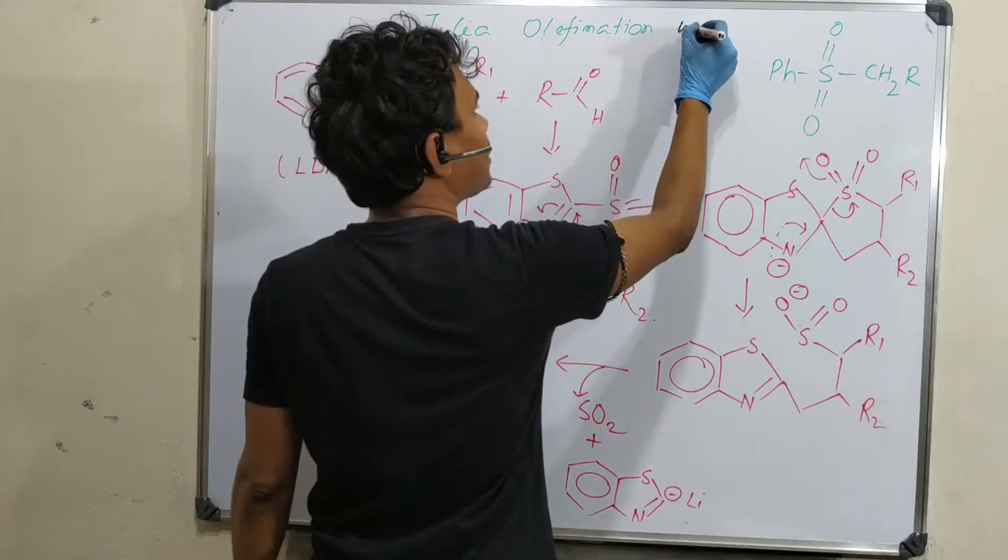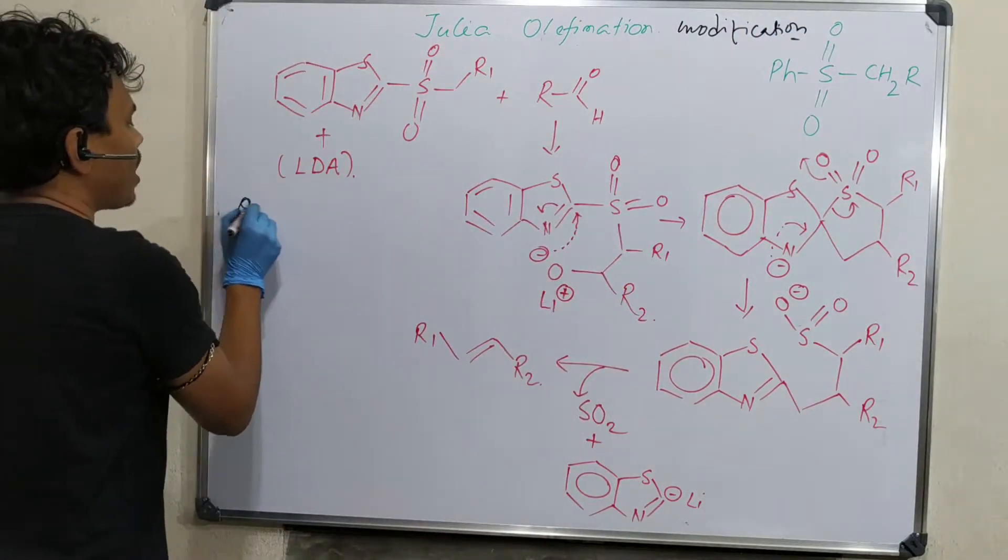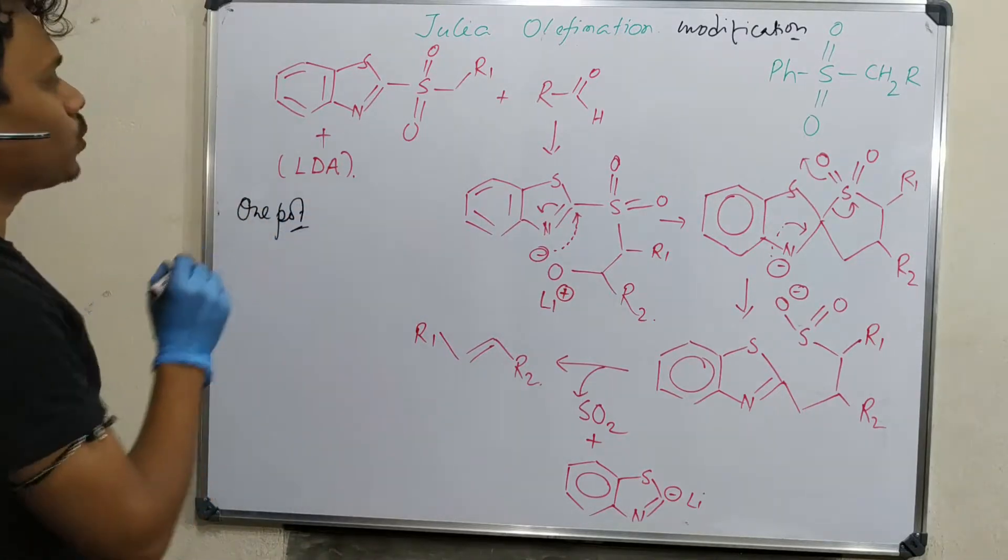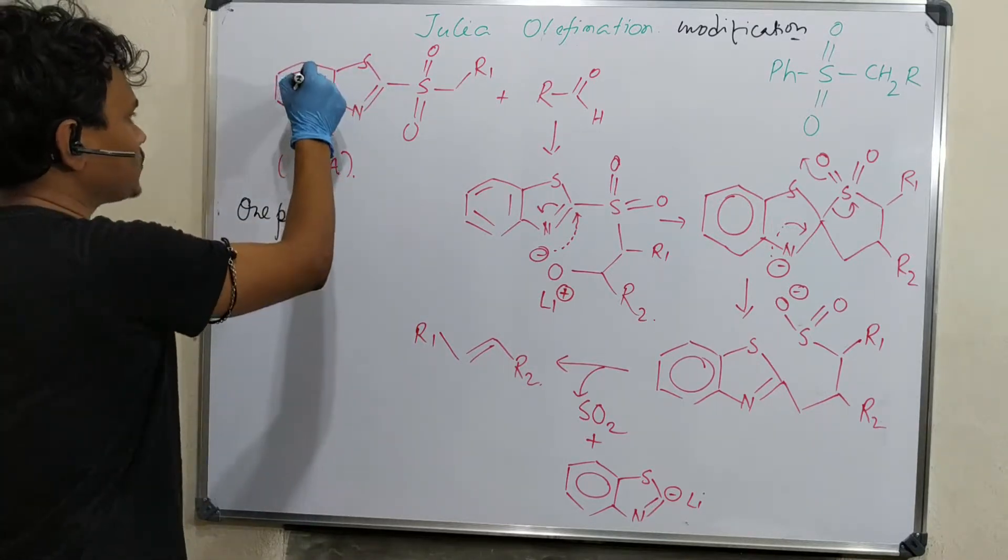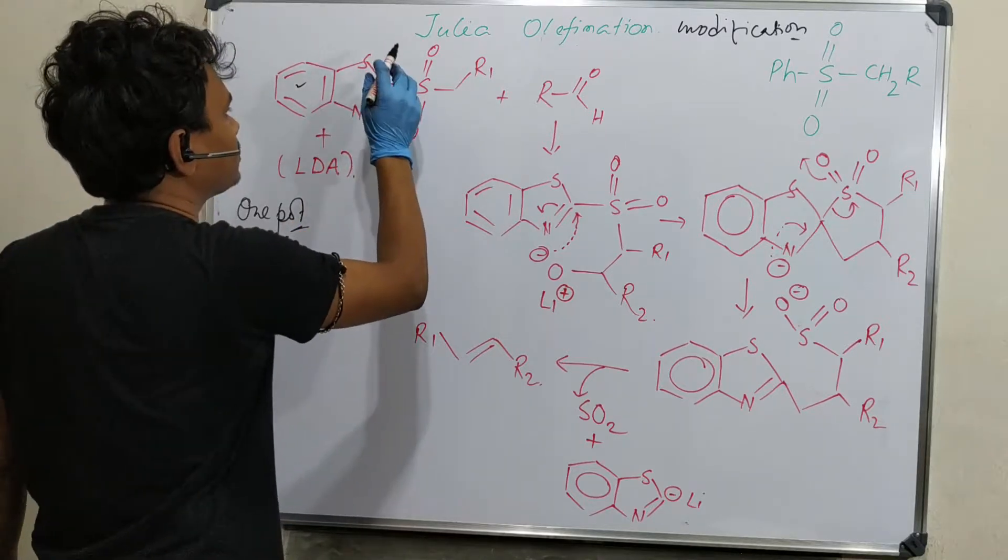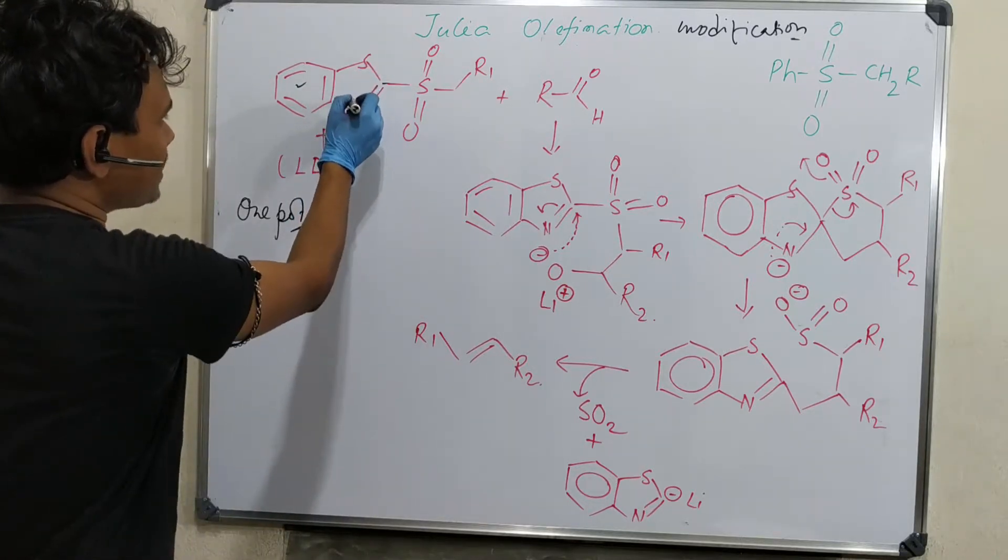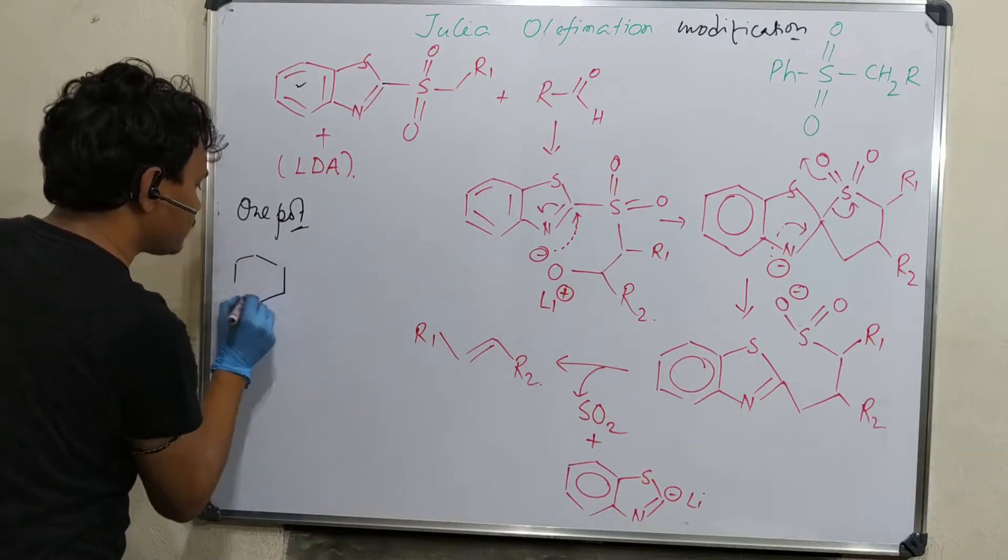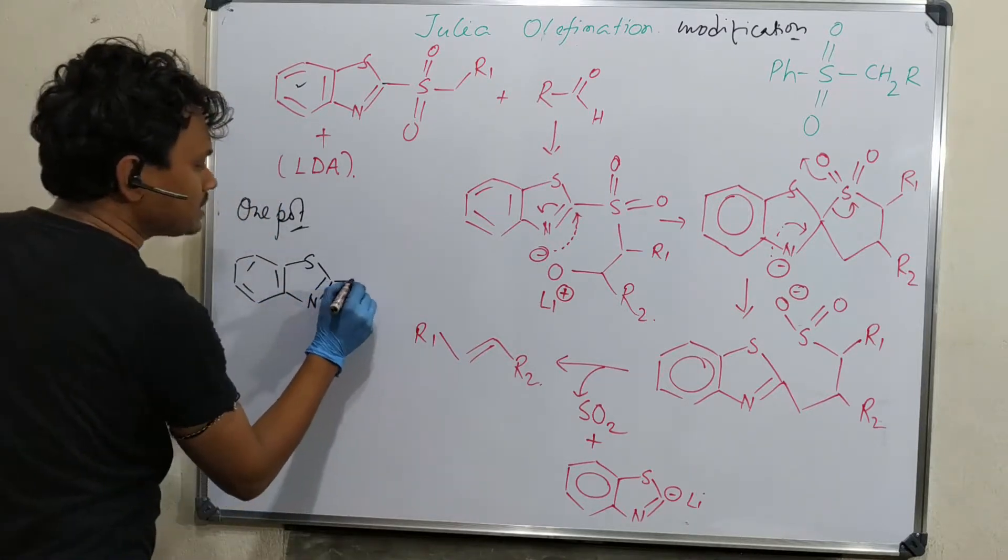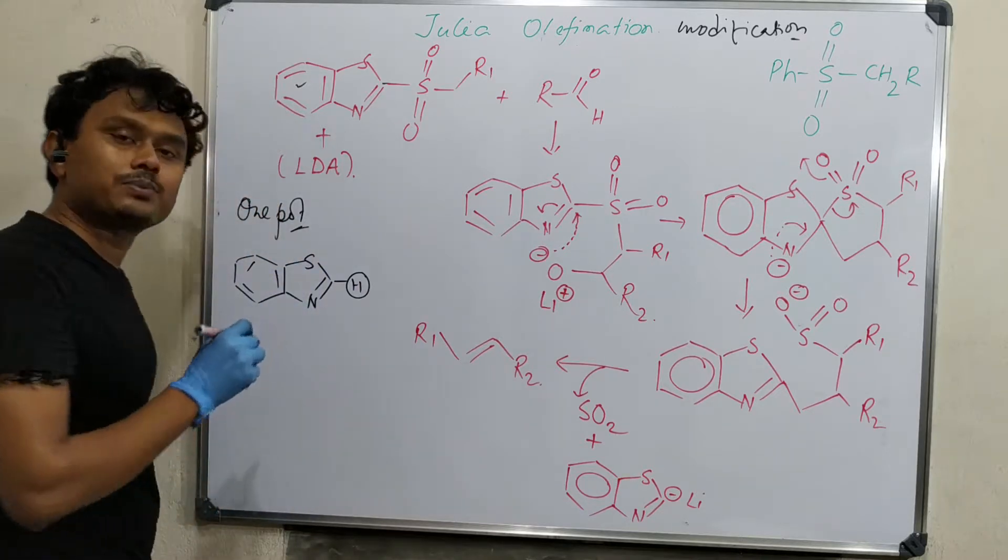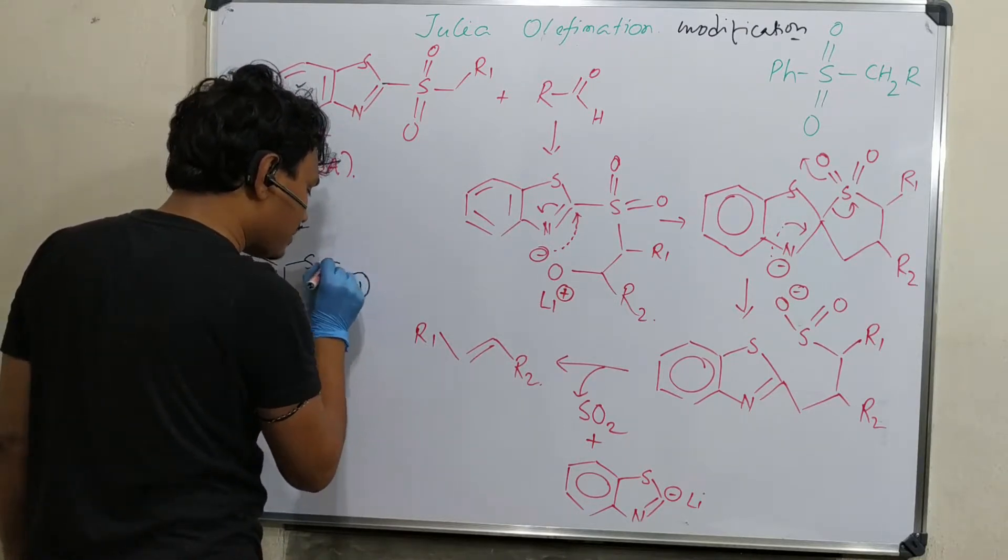This is the Julia olefination modification. What we have achieved? We made this reaction one-pot. Here, this sulfone is benzothiazole sulfone due to the phenyl group. This is thiazole. This material is prepared from corresponding parent thiazole. This hydrogen is fairly acidic that it could be abstracted in presence of strong base like LDA.